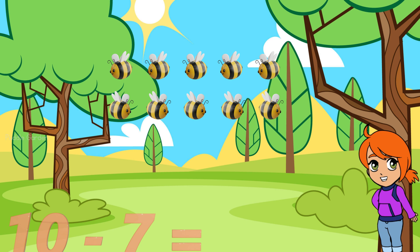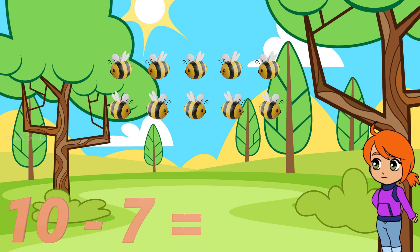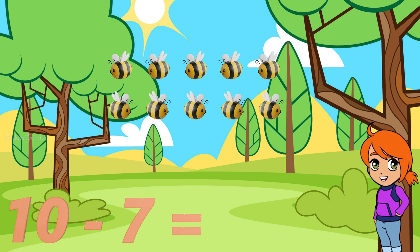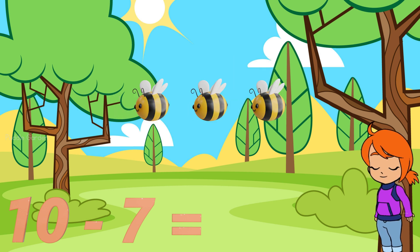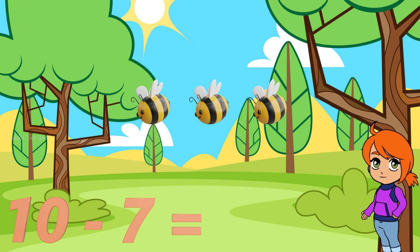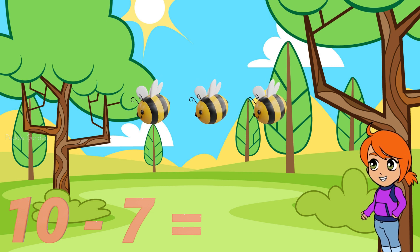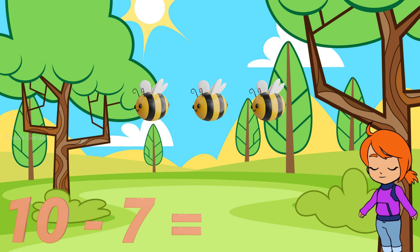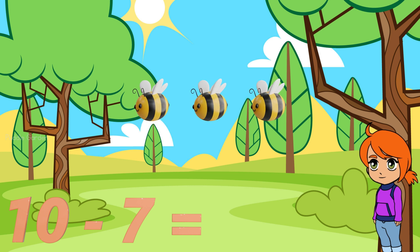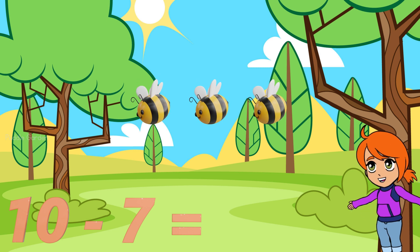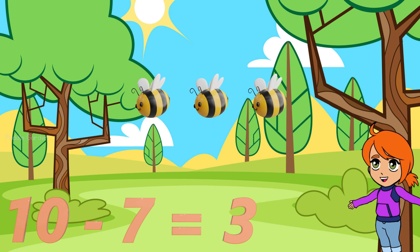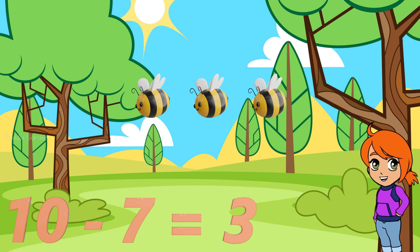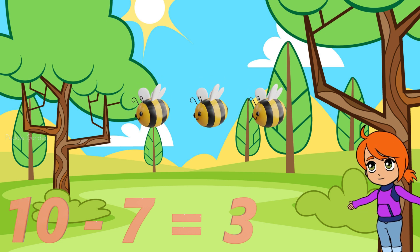Now if we have 10 and we're taking away 7 — how many are we left with? We had 10 and we subtracted 7. What is left? 1, 2, and 3 — we have 3 left. We know that 7 plus 3 equals 10, so 10 take away 7 equals 3.